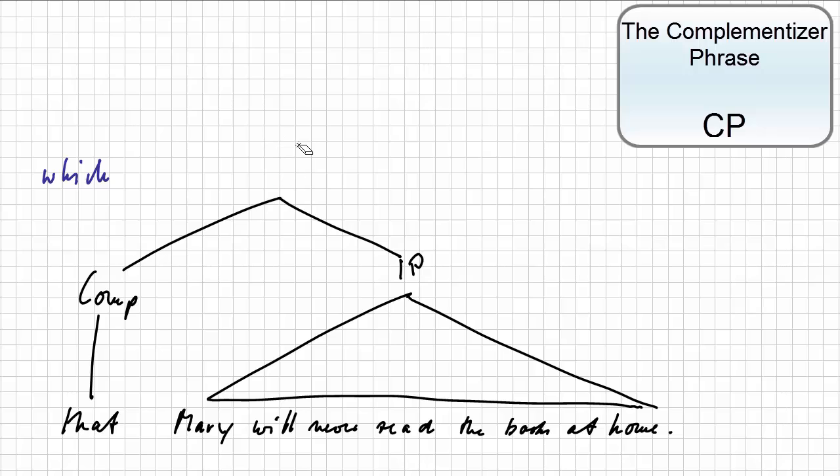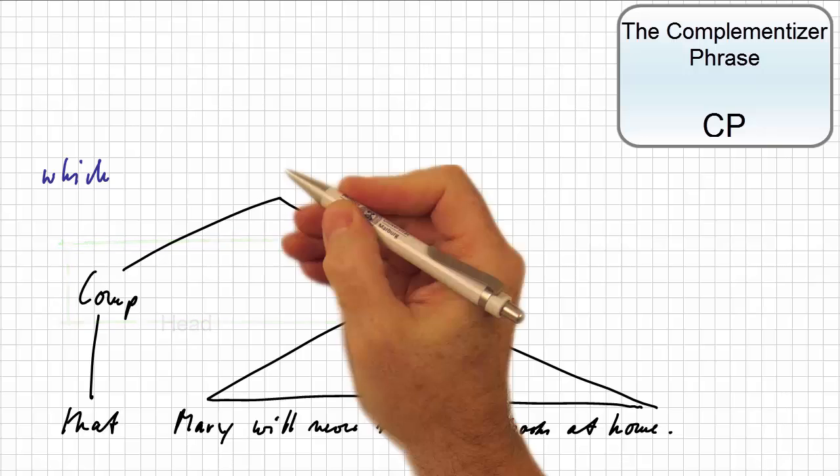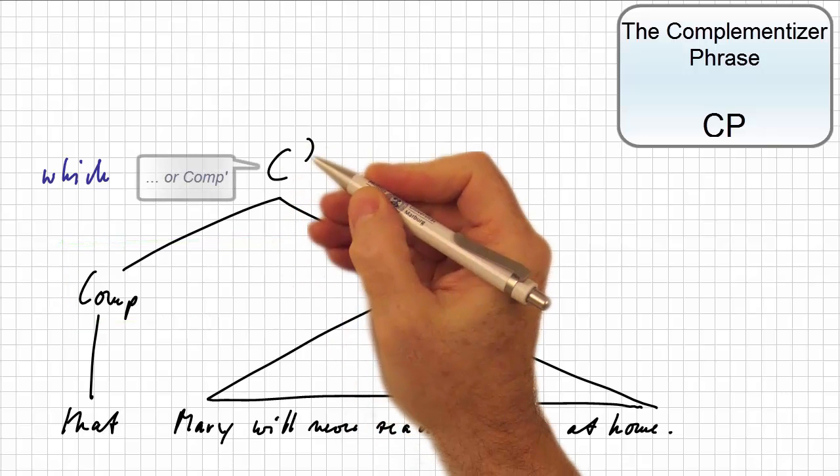In other words, we can build a constituent where the complementizer, which is widely held to be the syntactic head of a full clause, and the inflectional phrase have a common mother node, that consequently has to be called C-bar.